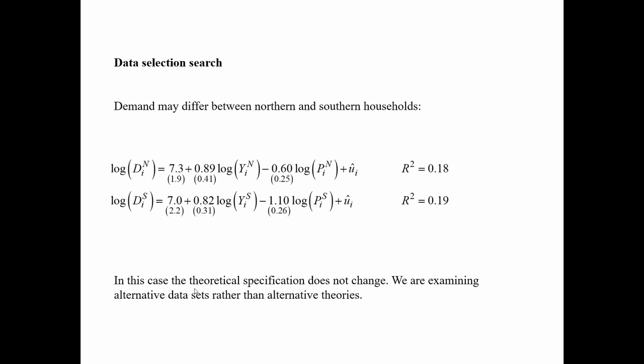Next is data selection search, which looks at differences between subsamples of the data. He divides the sample into northern and southern households to see if behaviour differs, and estimates separate regression equations for the two groups, finding quite different price elasticities — the northern households' price elasticity is much lower than the southern households'. The theoretical specification of the model doesn't change; what we're examining is whether the relationship is robust across different subsamples or data sets.